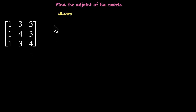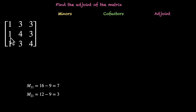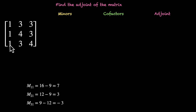Let's first find its minors, then cofactors, and then the adjoint. For M11, we have 16 minus 9, that's 7. For M21, that's 12 minus 9, that's 3. For M31 on the bottom left, the minor will be 9 minus 12, that's minus 3.